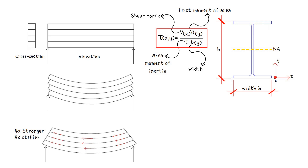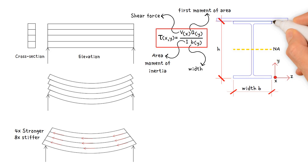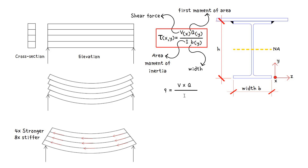The shear flow equation is the next equation, which is useful in built-up shapes, and can be used to determine the size of welds in built-up beams, as well as the spacing of individual connectors such as bolts, rivets, and nails. Shear flow q is defined as shear force per unit length, and it equals shear force V multiplied by the first moment of area Q, divided by the moment of inertia I.